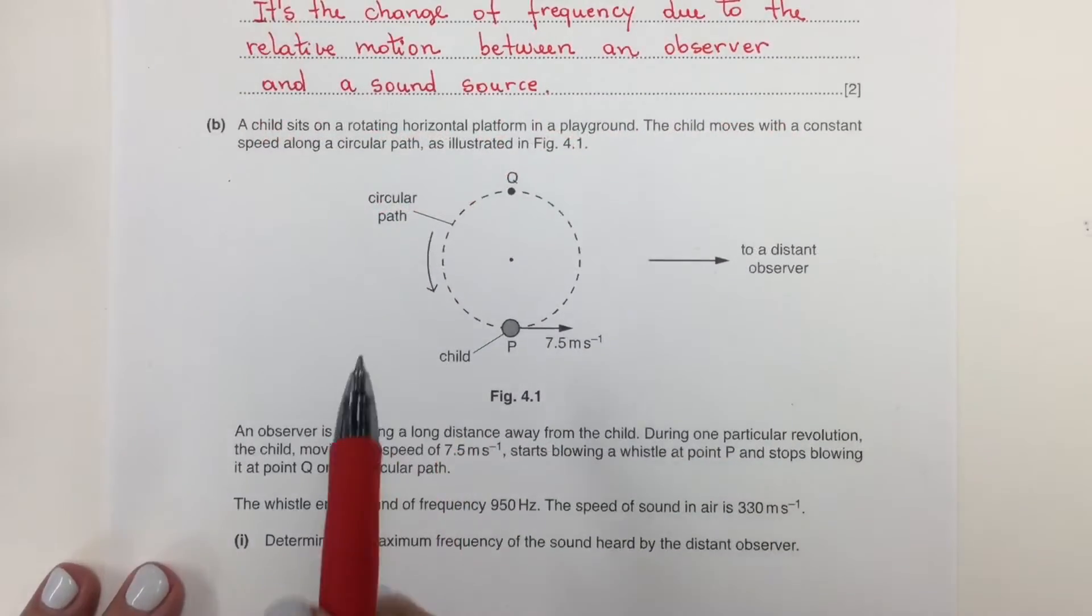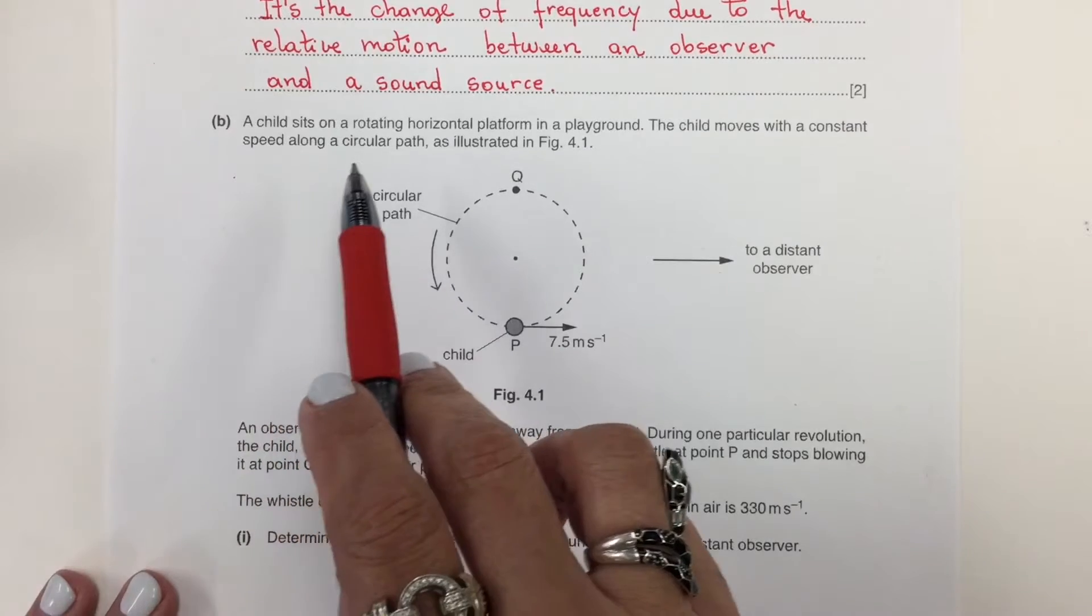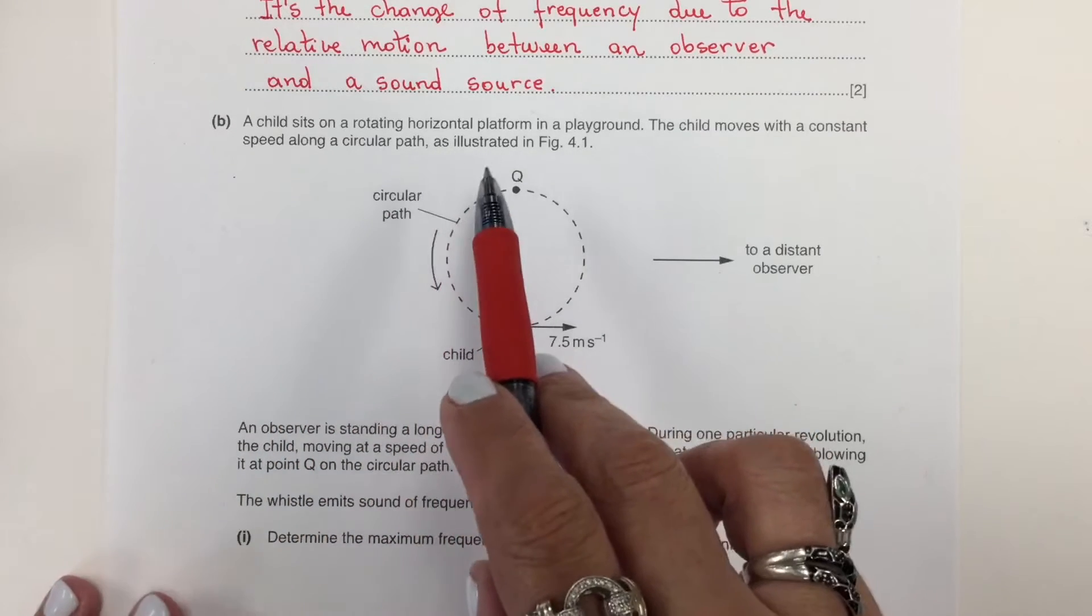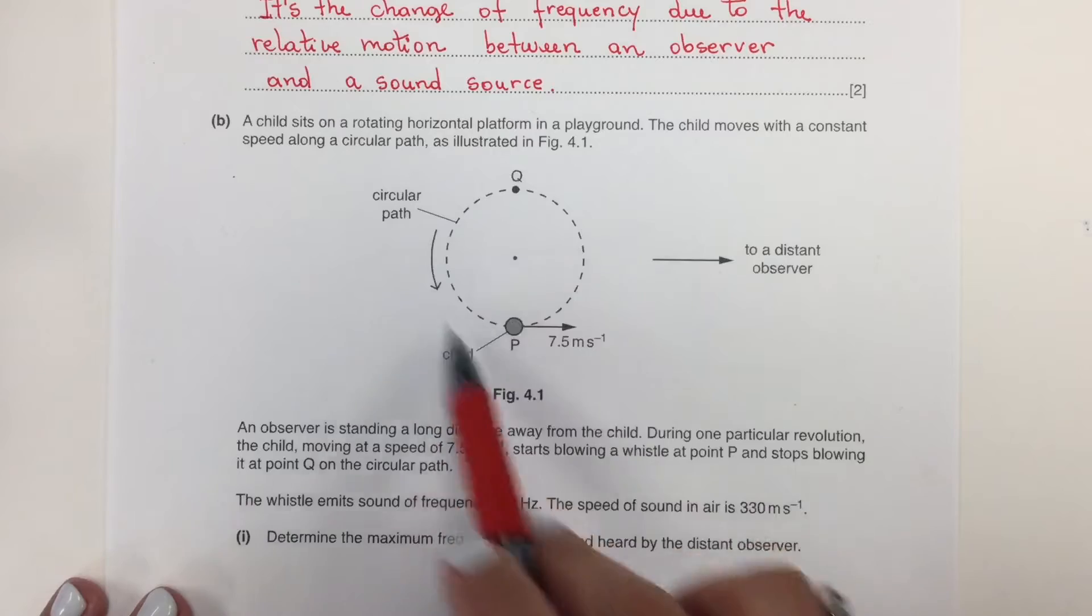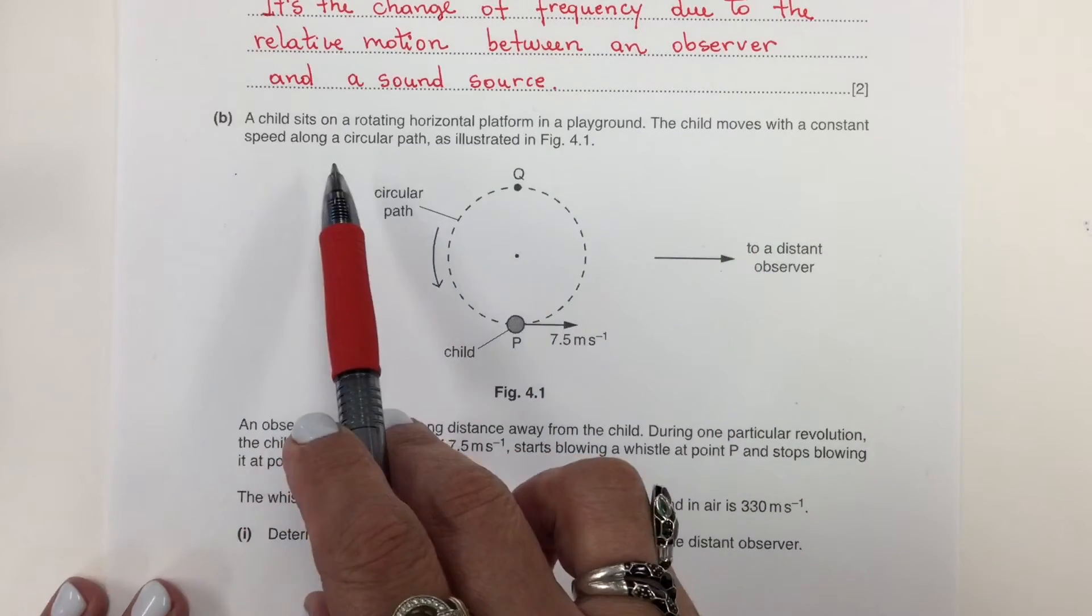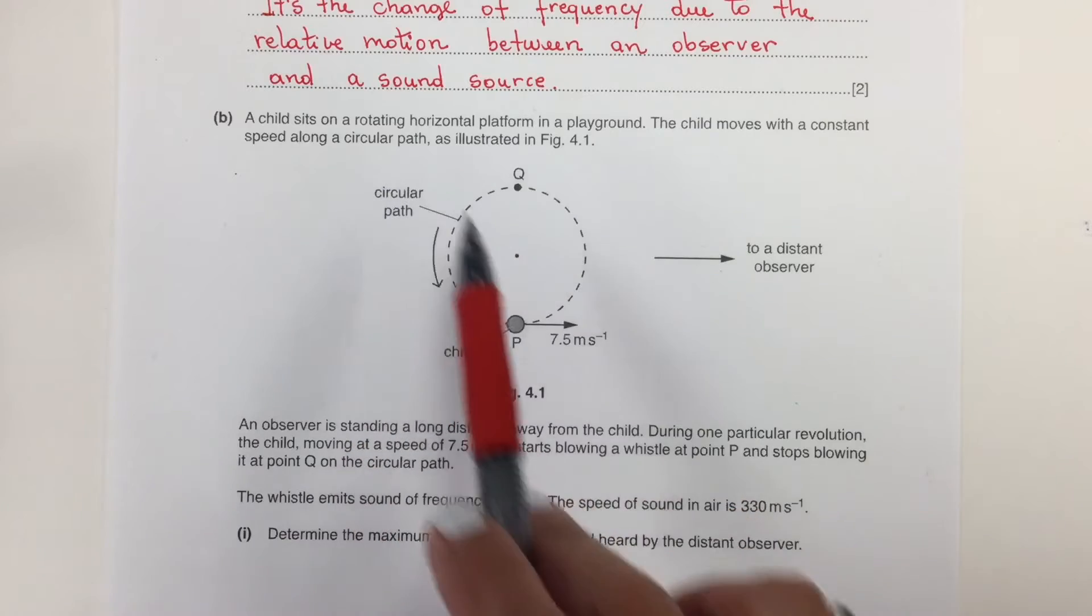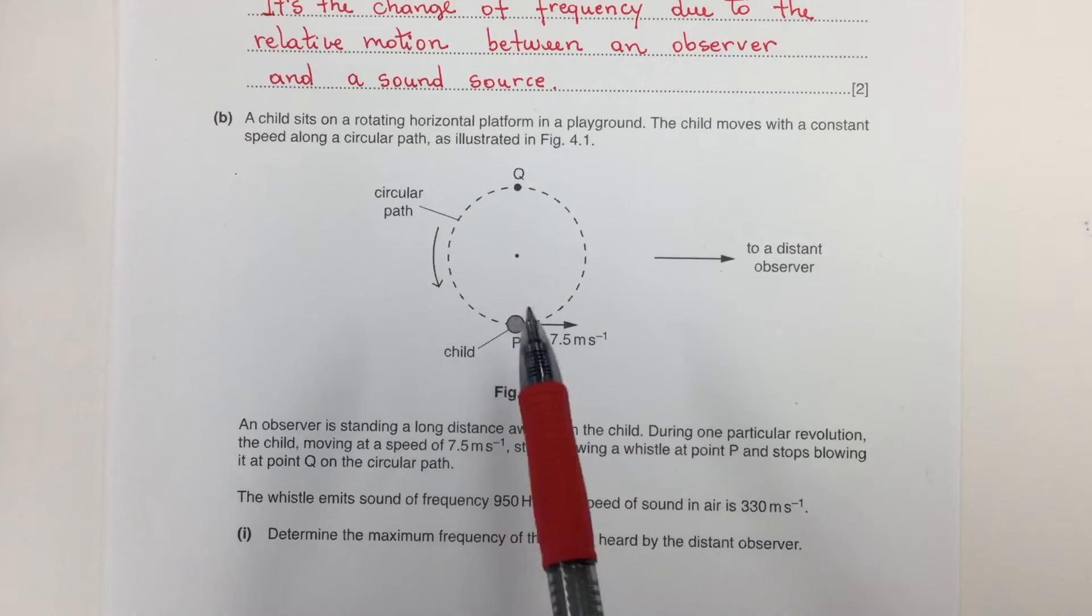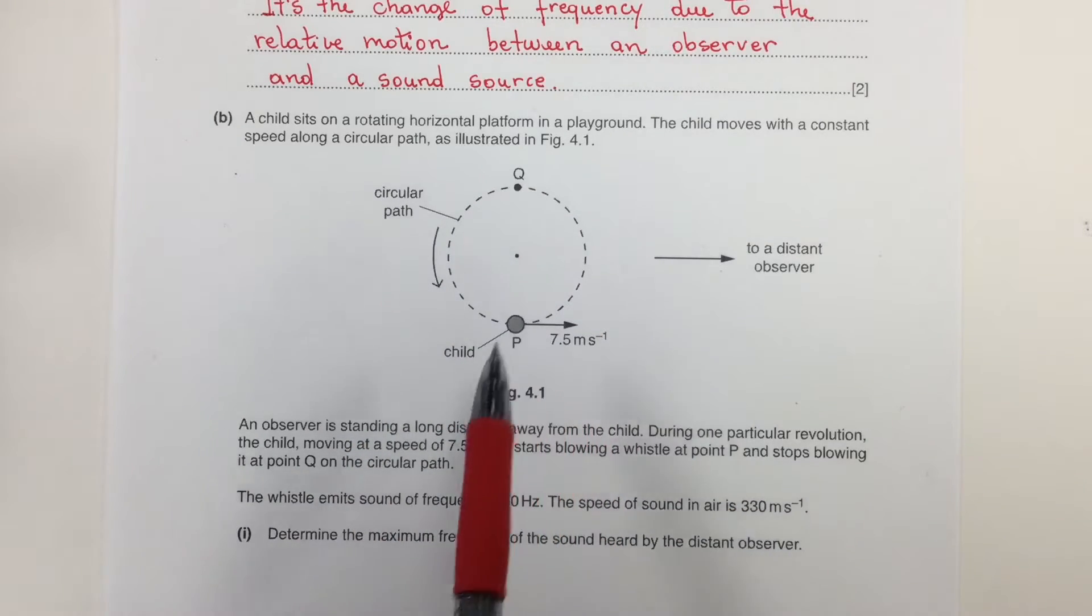Here is an example. A child sits on a rotating horizontal platform in a playground. The child moves with a constant speed along a circular path as illustrated in figure 4.1.